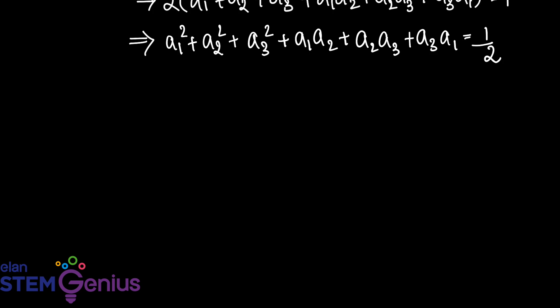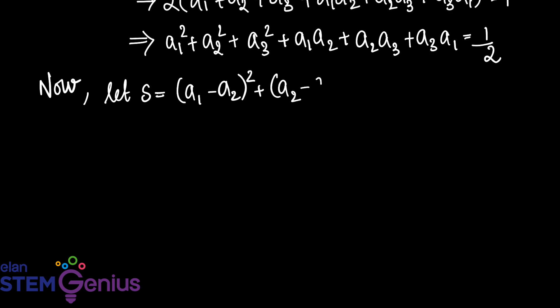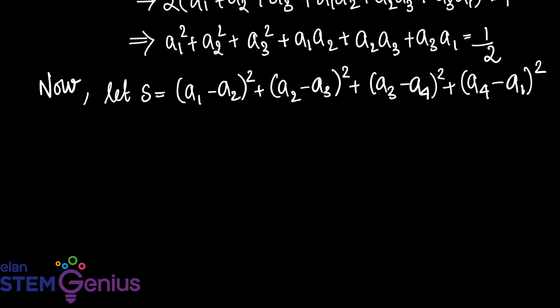Now we need to find the minimum value of the expression. Let S equal (a1 minus a2) squared plus (a2 minus a3) squared plus (a3 minus a4) squared plus (a4 minus a1) squared.